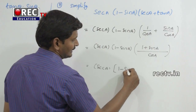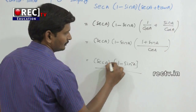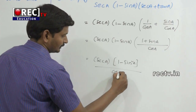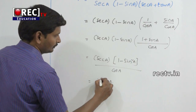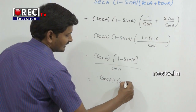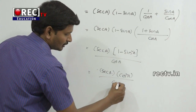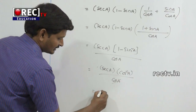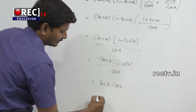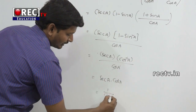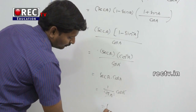That means 1 minus sin squared a divided by cos a. Now 1 minus sin squared a equals cos squared a, so we have sec a into cos squared a divided by cos a. One cos a cancels, leaving sec a into cos a, which equals 1 by cos a into cos a, and cos a cancels to give 1.